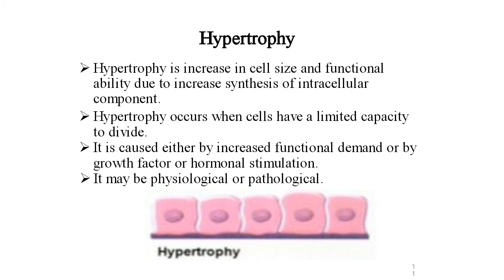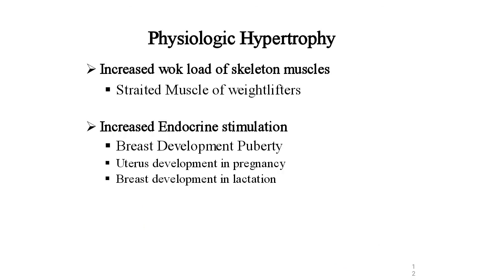Hypertrophy occurs when cells have a limited capacity to divide. It is caused either by increased functional demand or by growth factor or hormonal stimulation. It may be physiological or pathological. Physiological hypertrophy includes increased workload of skeletal muscles — like in weight lifters, where increased demand causes skeletal muscle size to increase via hypertrophy.